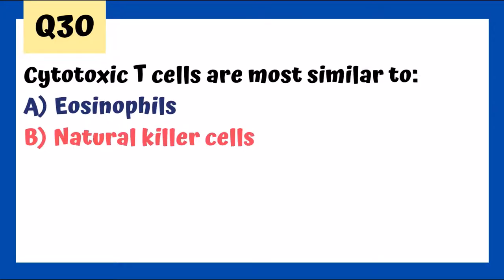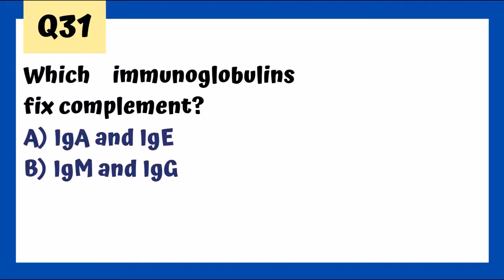Which immunoglobulin fixes complement? IgM and IgG — IgM in the earlier response and IgG in the later response. IgM has the highest ability to fix complement because it has so many available spaces — it's a pentamer in its secreted form, five times the amount.